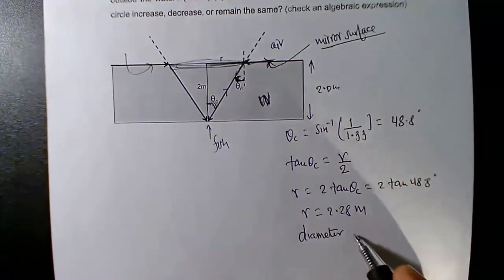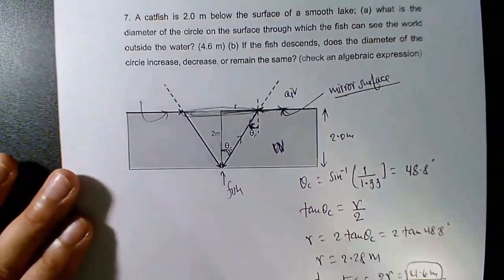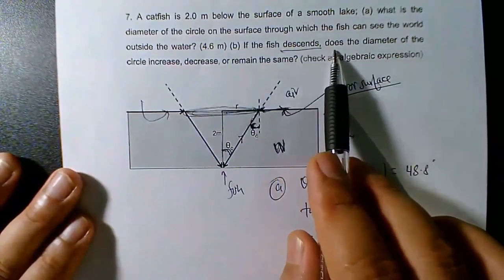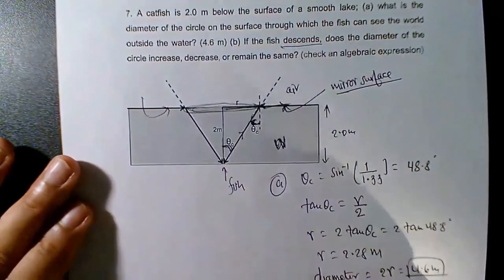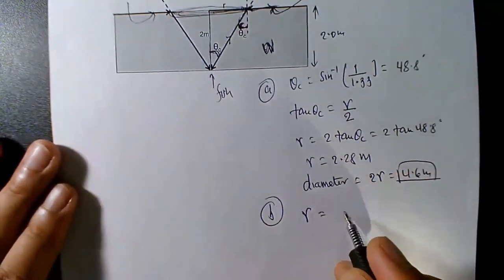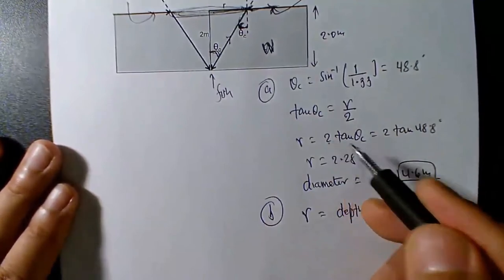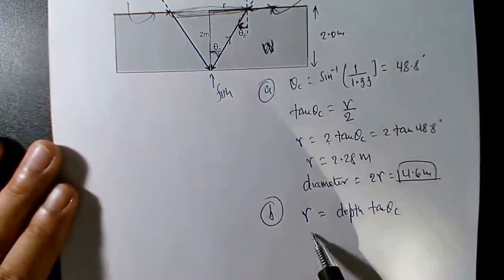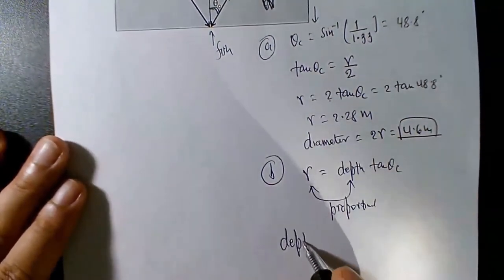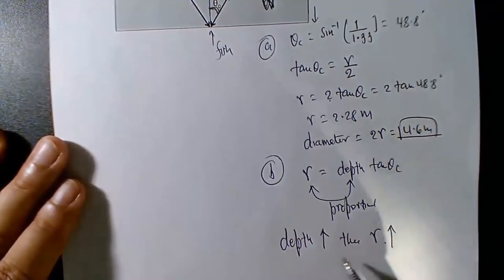If the fish descends deeper — goes to greater depth — does the diameter increase, decrease, or stay the same? From the formula, diameter = 2 × depth × tan(theta_c). Since the critical angle stays the same for the water-air system, diameter is proportional to depth. So if the fish goes deeper, the diameter increases.